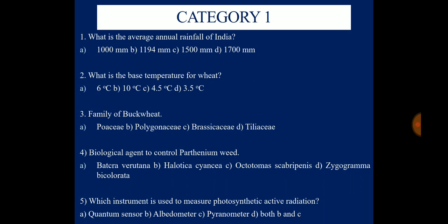Question number 5: Which instrument is basically used to measure photosynthetically active radiation? Options are Quantum sensor, Albedometer, Pyranometer, or both B and C. This is all about Category 1, which is under the Easy category. Let us move on to Category 2.